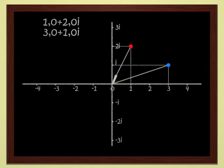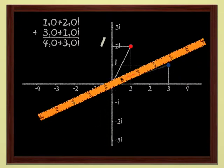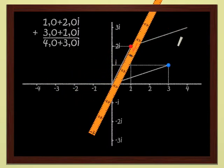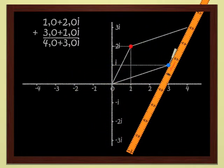Well, you add them just as school children do. That gives us 4 plus 3i. Geometrically, this is just addition of vectors. You see that it's no problem to add complex numbers.